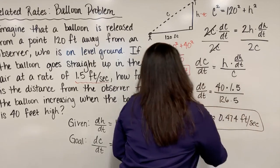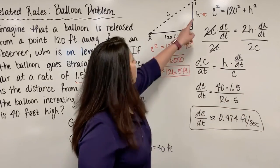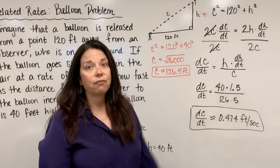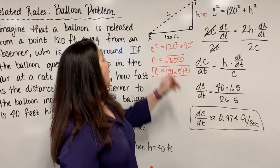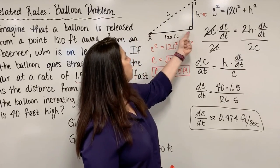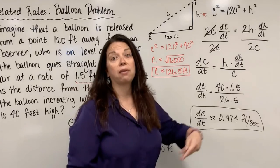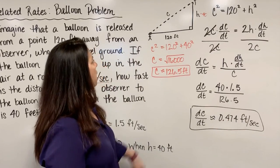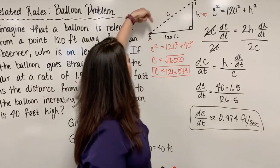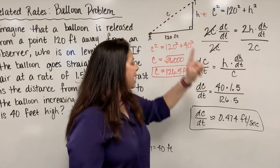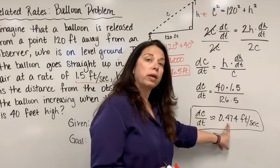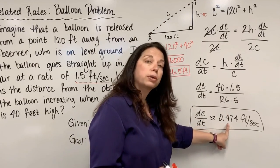So what does this tell us? It tells us that when the balloon is exactly 40 feet off the ground, and when the observer is 120 feet away from the launch of that balloon, the distance between that observer and the balloon is changing at a rate of 0.474 feet per second.